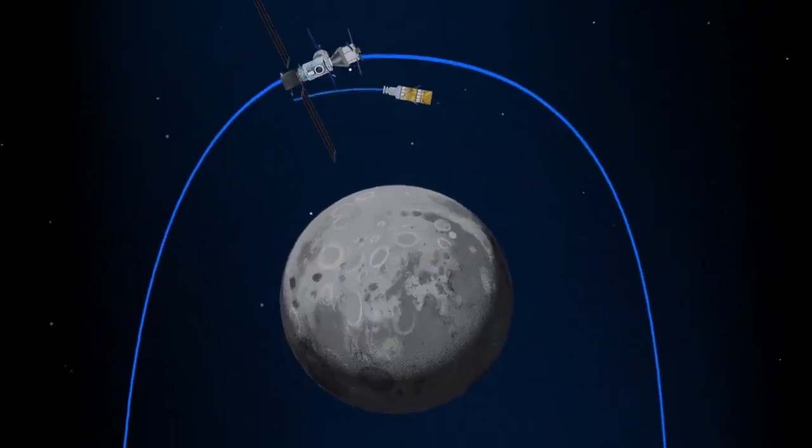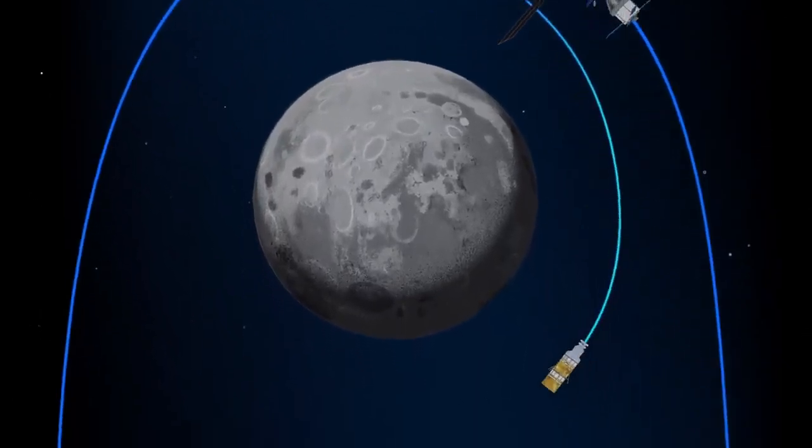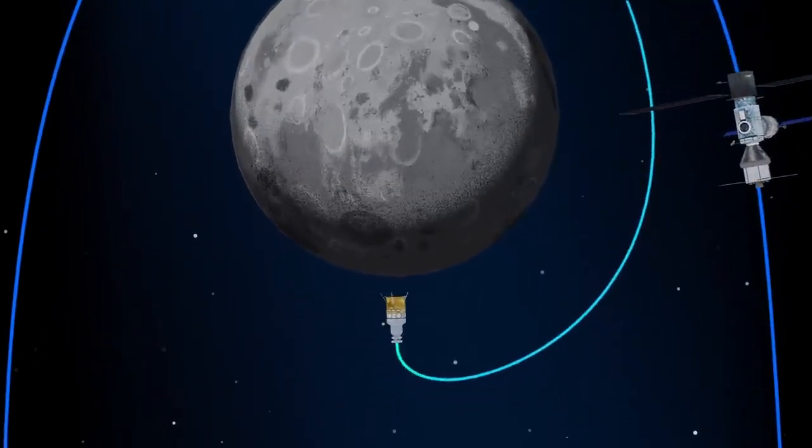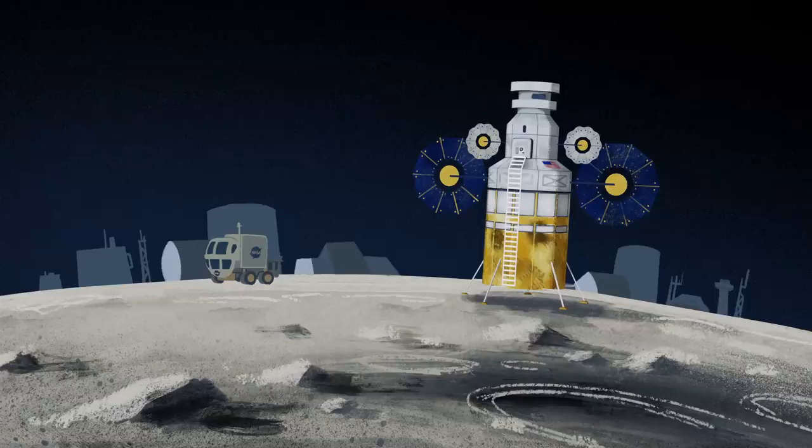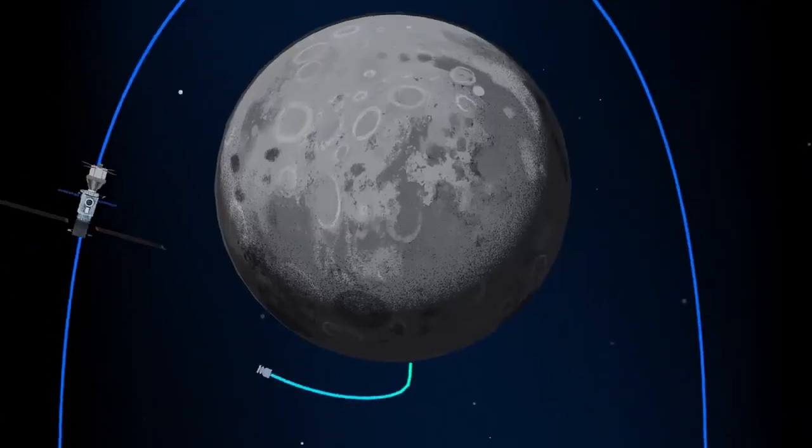The lunar lander system itself is built for three unique steps: descending from the halo orbit of Gateway down to a low lunar orbit, descending from low lunar orbit to the surface, and once the lunar mission is complete, launching from the surface of the Moon and ascending all the way back to the orbiting Gateway.